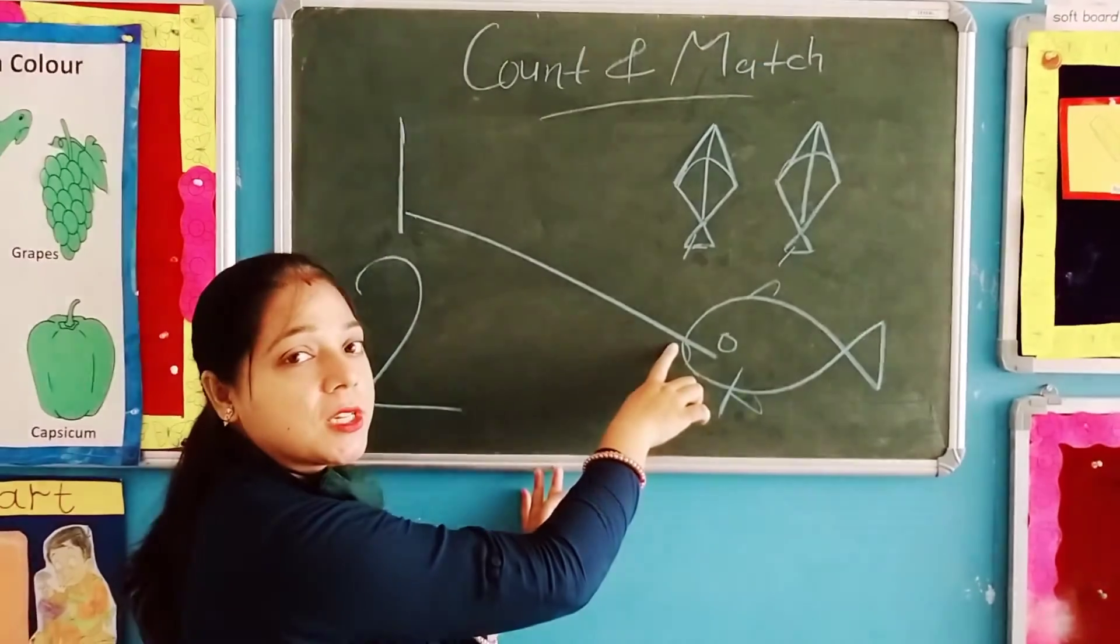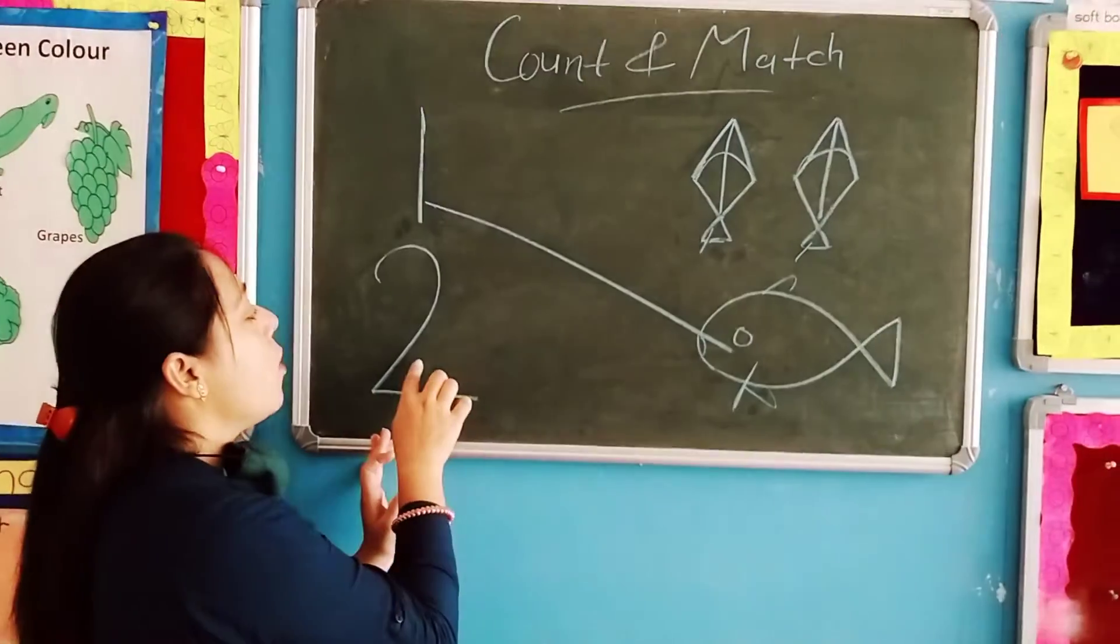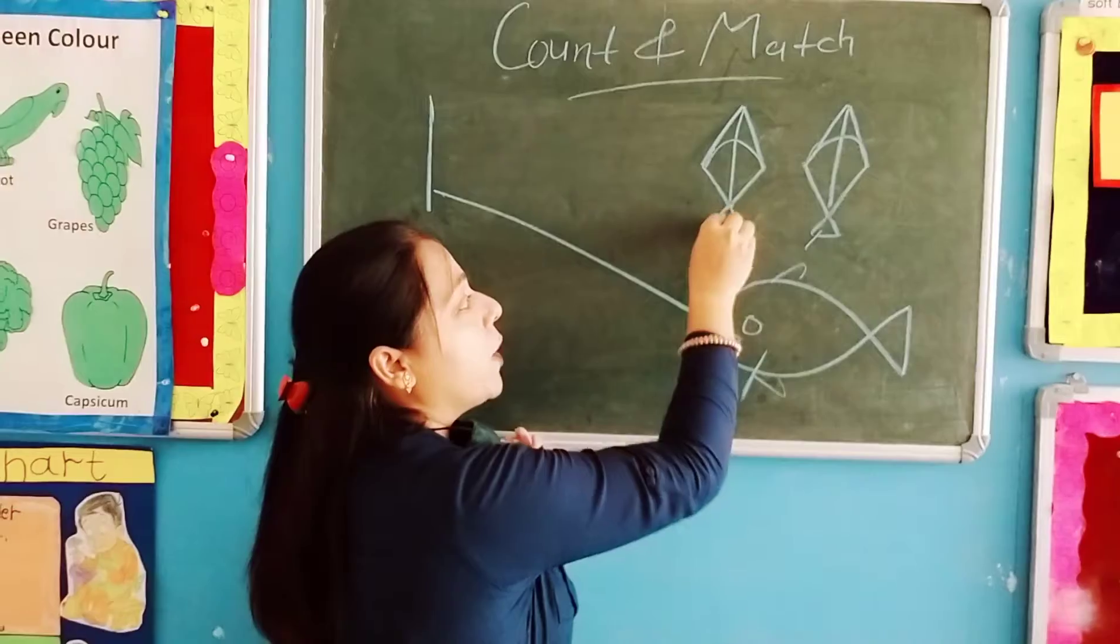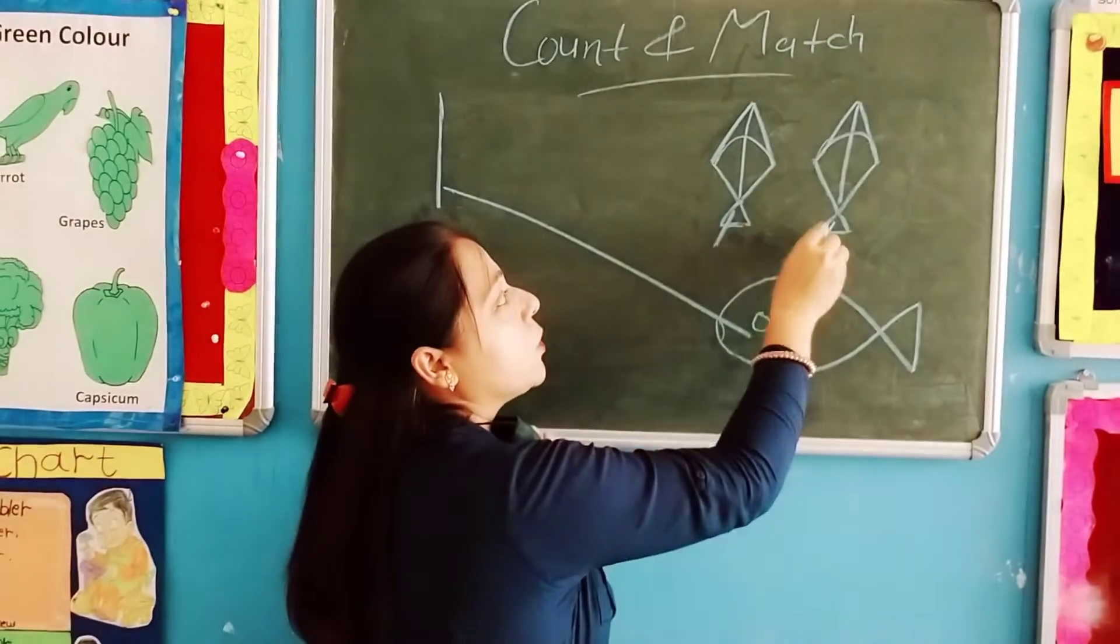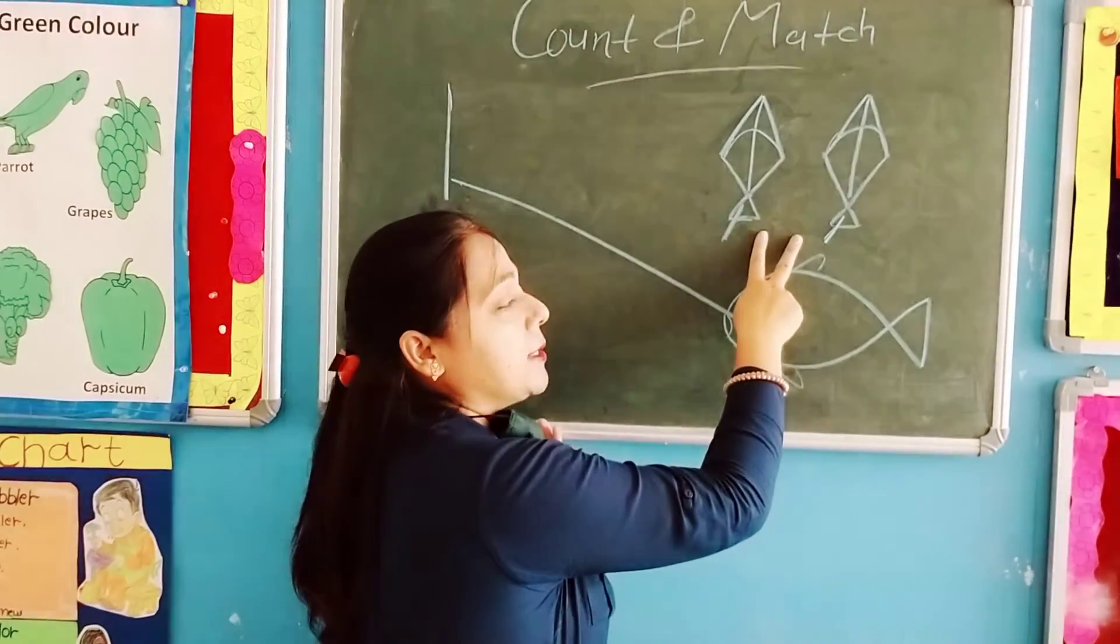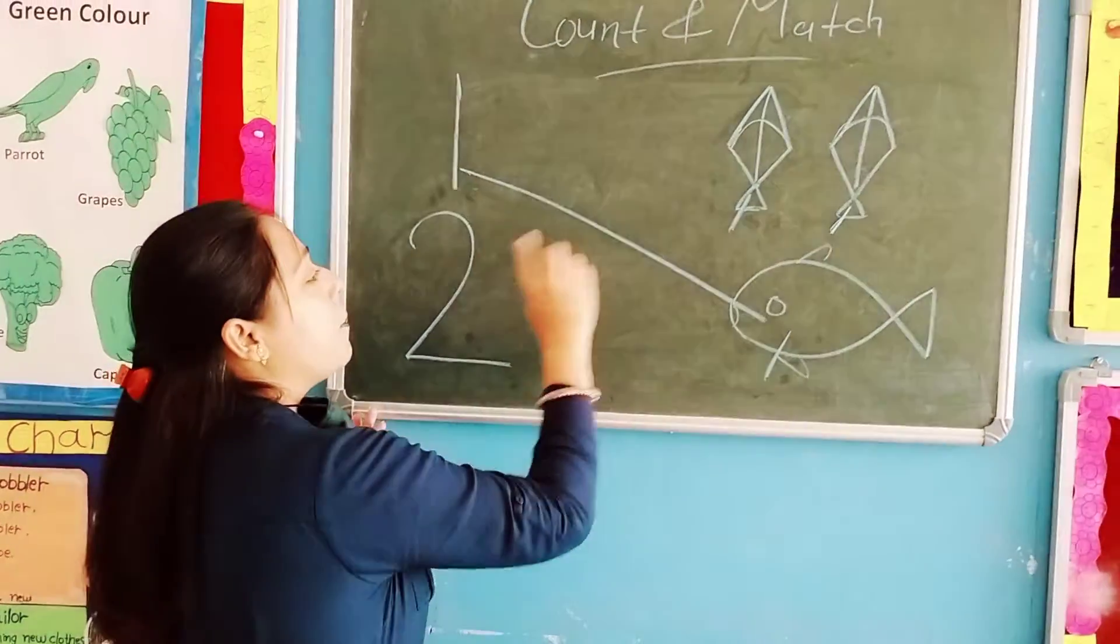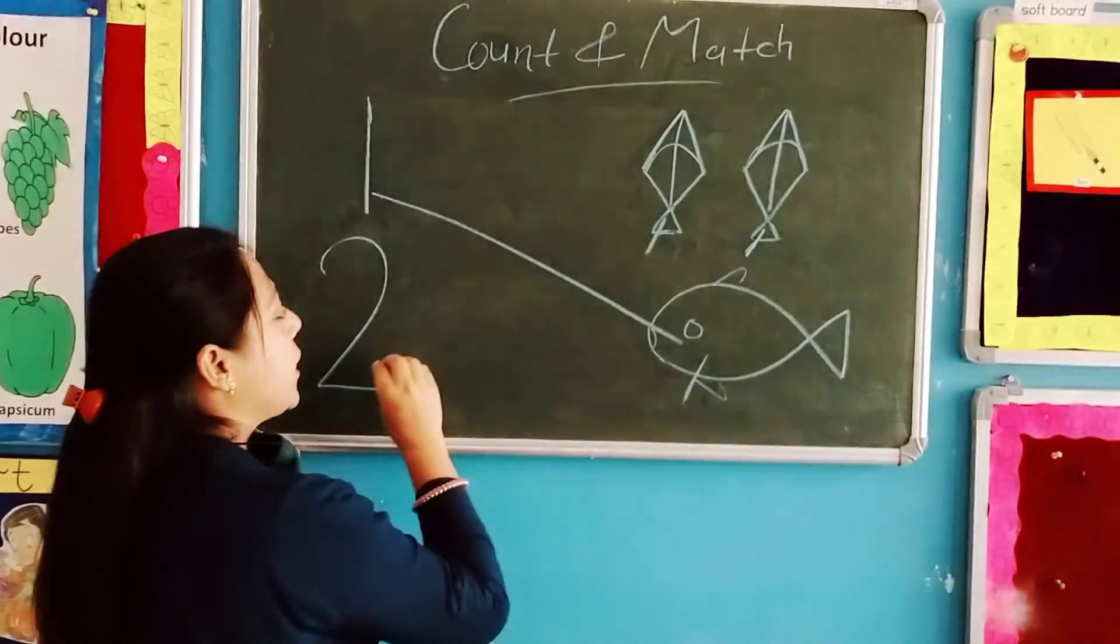We will match it. Now, this is number 2. How many kites? 1 kite, 2 kites. 2 kites. So, we will match two numbers se two kites to match karenge.